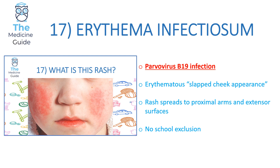Rash 17 is erythema infectiosum, caused by Parvovirus B19 infection — important to remember the virus name. Children present with an erythematous slapped cheek appearance, as though someone has smacked both cheeks. The rash spreads from the cheeks and facial region to the proximal arms and then to the extensor surfaces. No school exclusion is needed for erythema infectiosum.